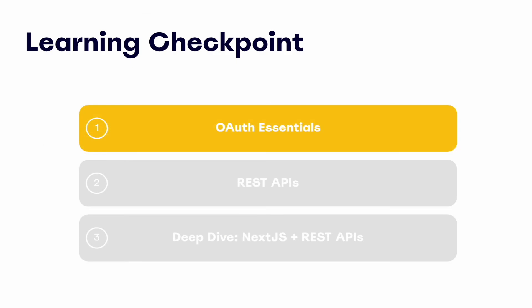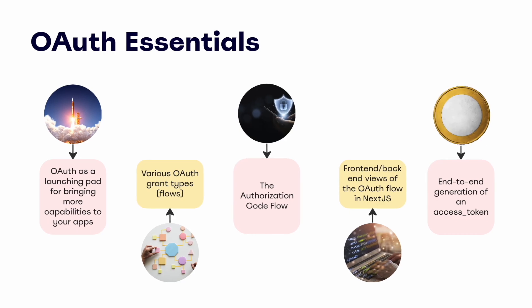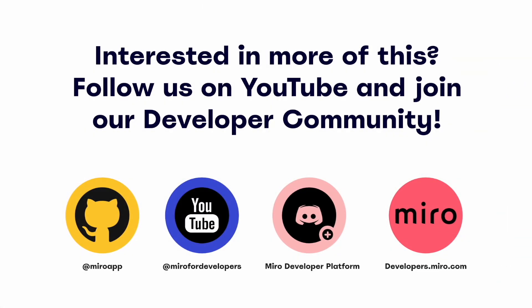We've covered a lot — from OAuth's role in front-end development to generating an access token, building a solid foundation for understanding OAuth and implementing the authorization code flow. Here's a quick recap: OAuth is a launching pad for bringing more capabilities to your apps; the various OAuth grant types or flows; the authorization code flow specifically; a frontend and backend view of the flow in Next.js; and an end-to-end generation of an access token. If you've found this module helpful, the next part of this series will focus on leveraging REST APIs within frontend applications, and the final part will be a deep dive of a frontend app bringing everything together. Follow us on YouTube for more developer tutorials and join our developer community on Discord.